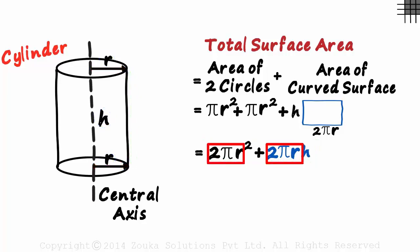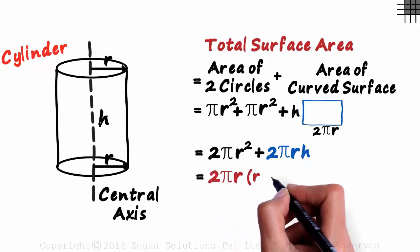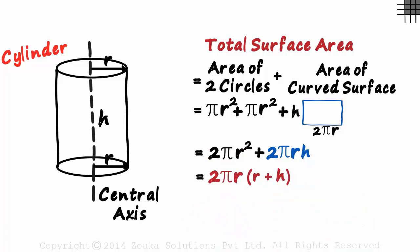As 2πr is common to both the terms, we can write it as 2πr(r + h). That's the total surface area.